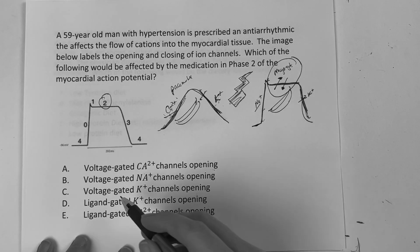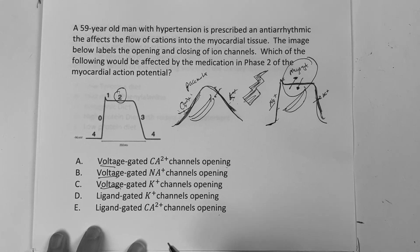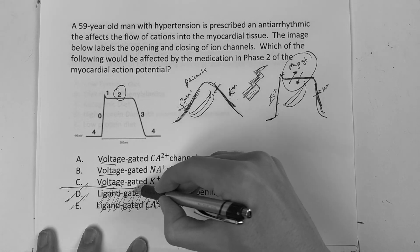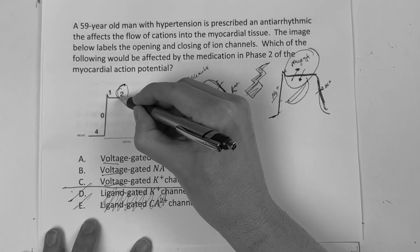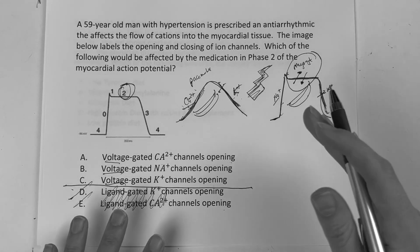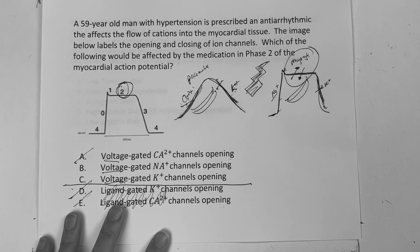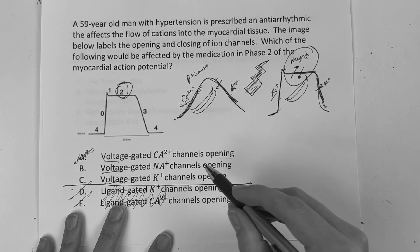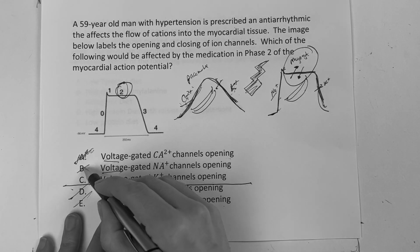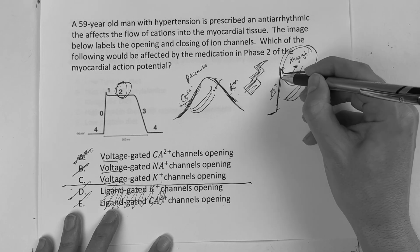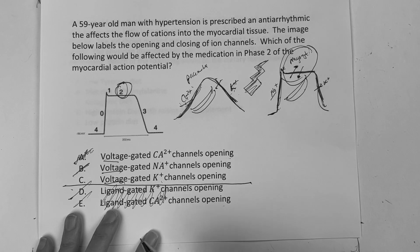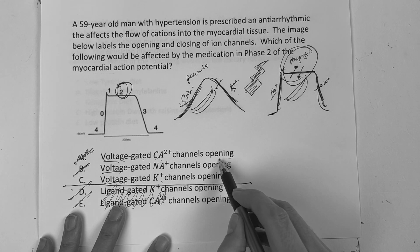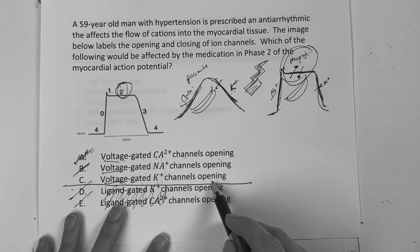When we're here, we're dealing with voltage-gated channels, not ligand-gated. So in phase 2, there's a balance. We know it's not sodium, because sodium is not involved in that phase. So is it going to be the voltage-gated calcium channels opening, or is it going to be the voltage-gated potassium channels opening?